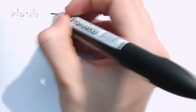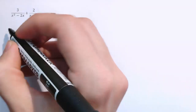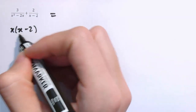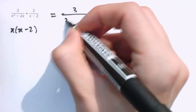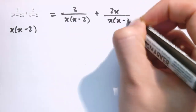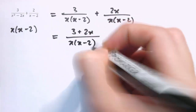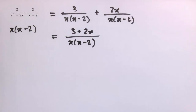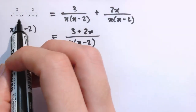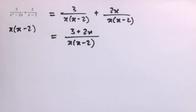Another example: 3 over (x squared minus 2x) plus 2 over (x minus 2). If you factorize x squared minus 2x, you get x times (x minus 2). So we can use x times (x minus 2) as the common denominator, since the factor (x minus 2) appears in the second fraction too. The first fraction is already 3 over x(x minus 2), and the second becomes 2x over x(x minus 2) after multiplying top and bottom by x. Combining gives 3 plus 2x over x(x minus 2). So if you have a quadratic factor in the denominator, always factorize it first to find an easier common denominator.